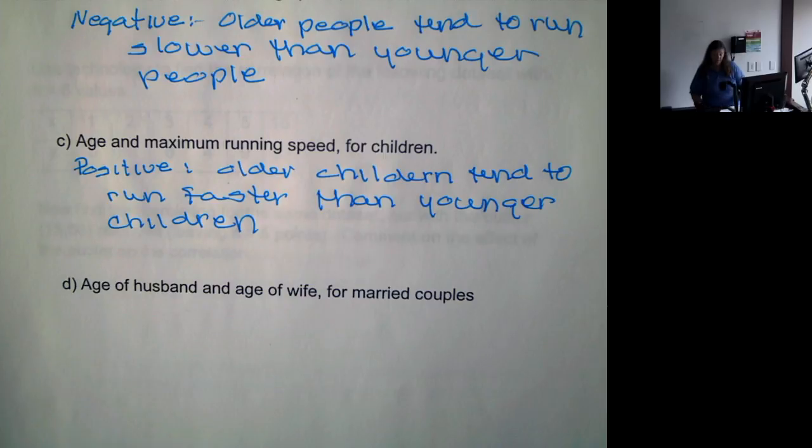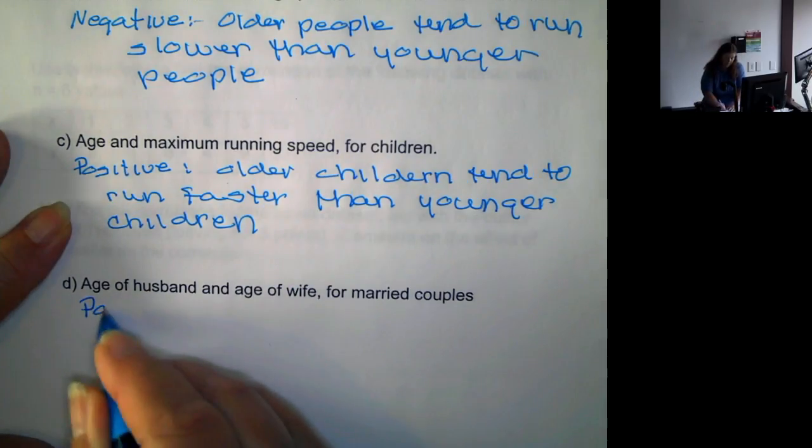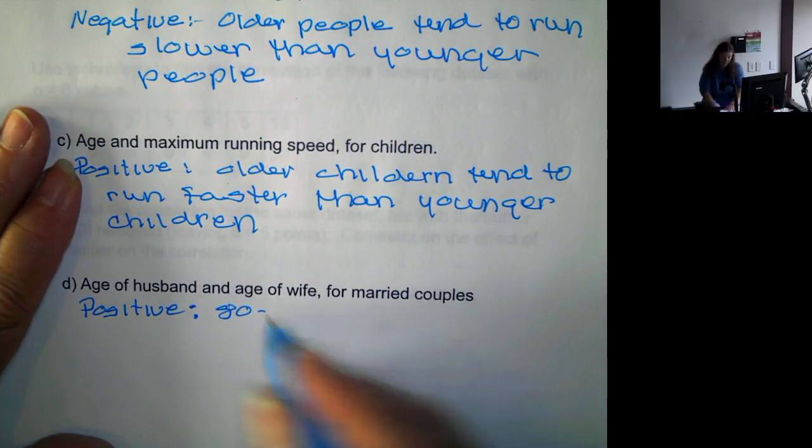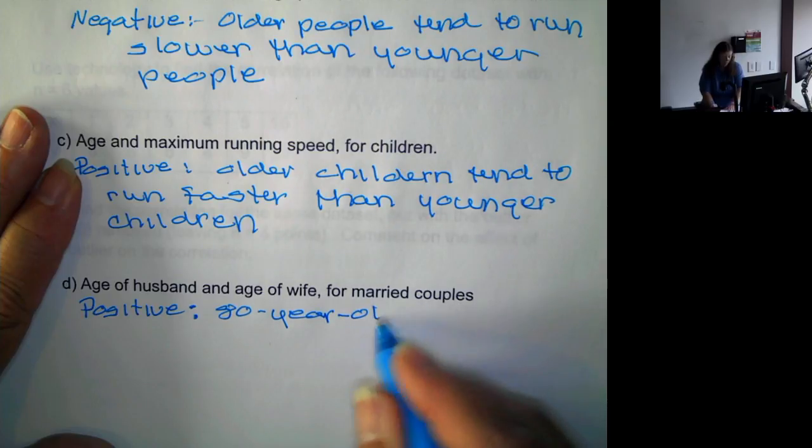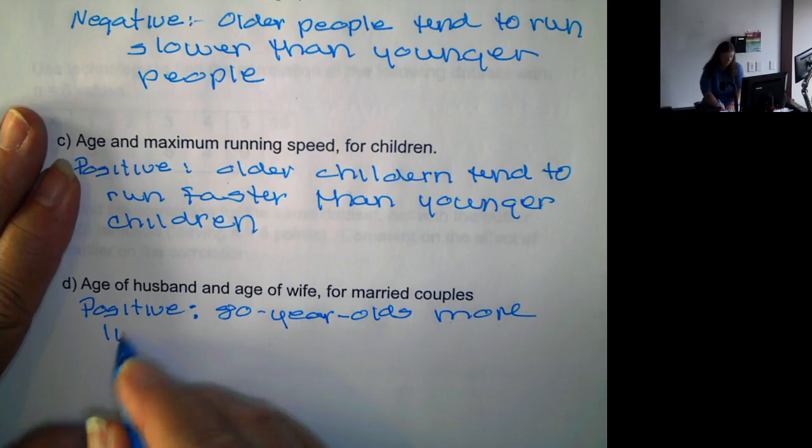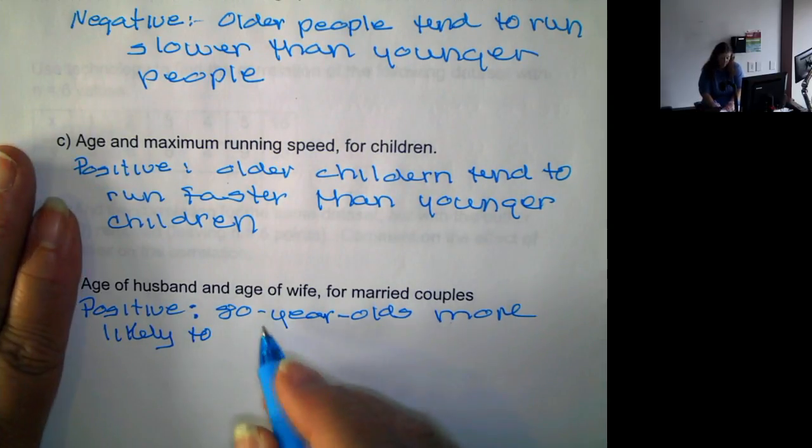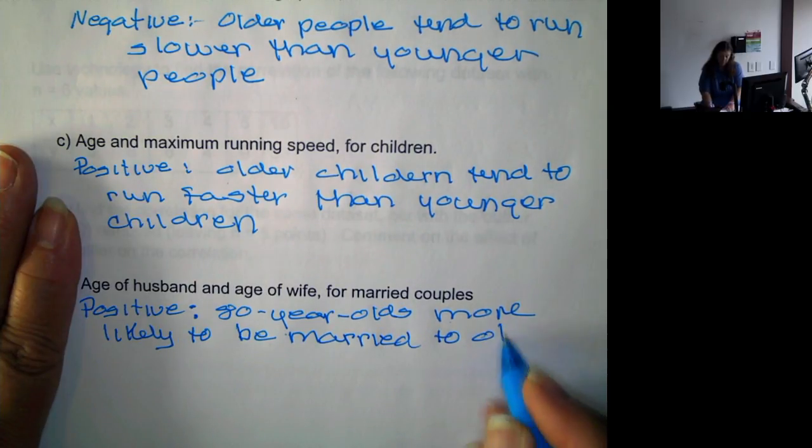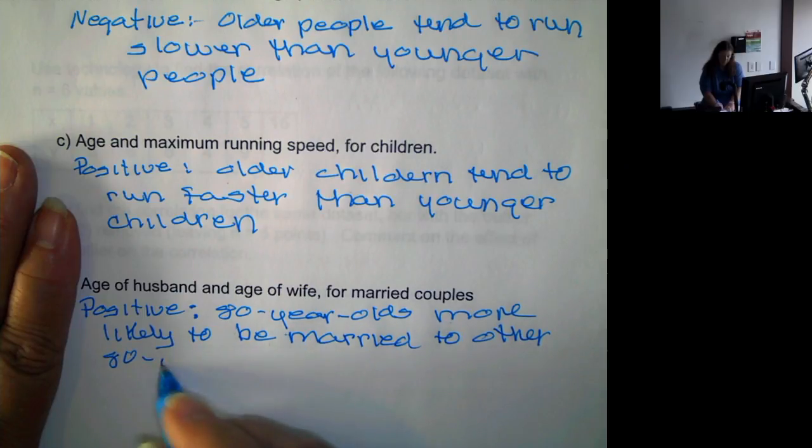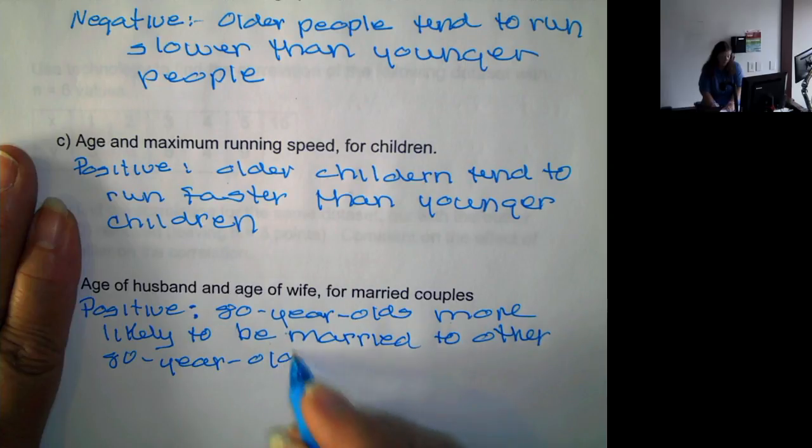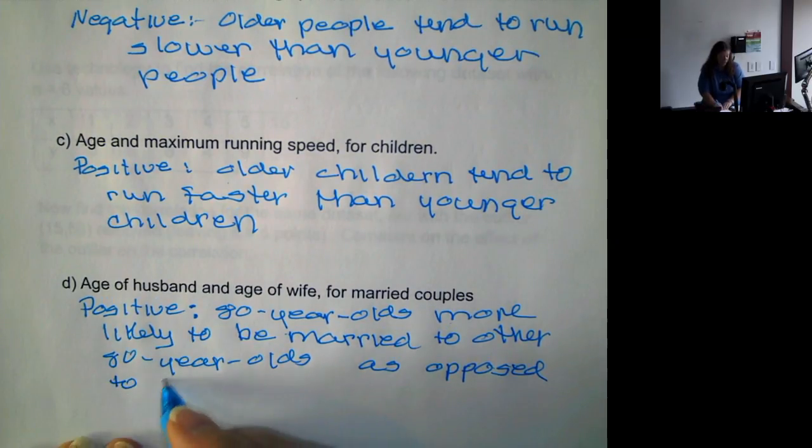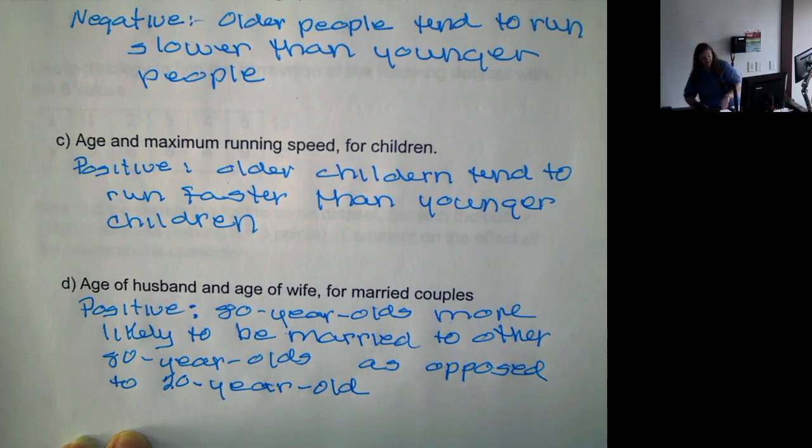Now, age of husband and age of wife for married couples, we would expect this to be a positive association because usually 80-year-olds are more likely to be married to other 80-year-olds as opposed to 20-year-olds. And we know there are exceptions, but this is the norm. Usually, you'll marry someone within several years of your own age.